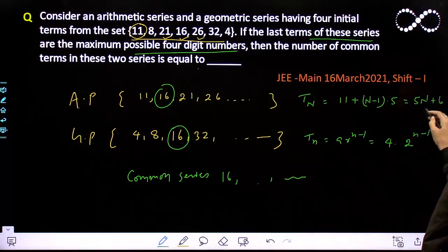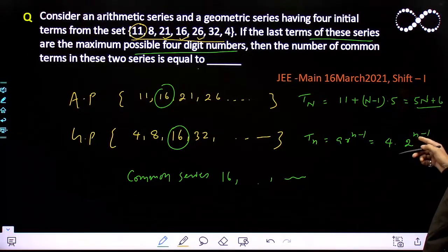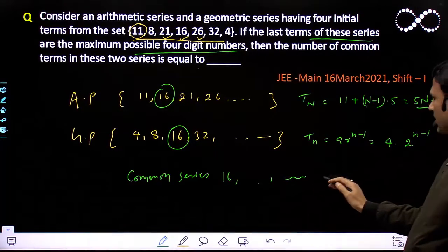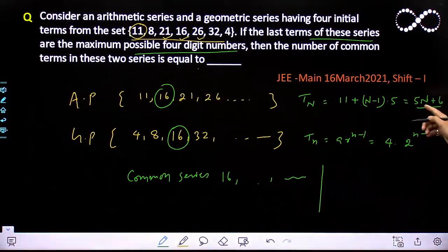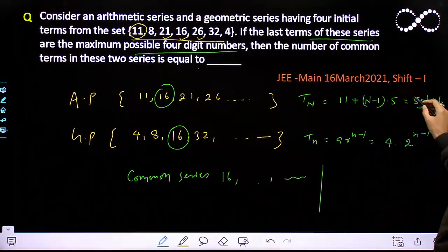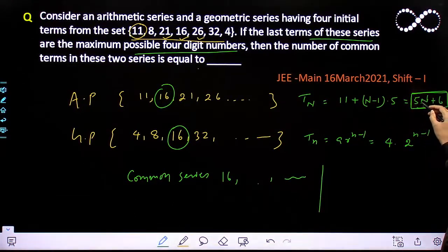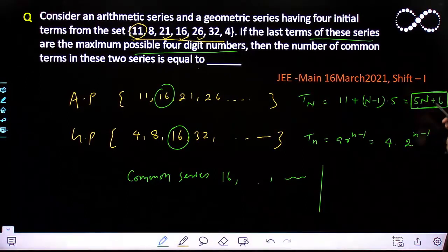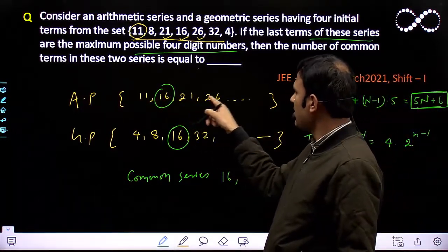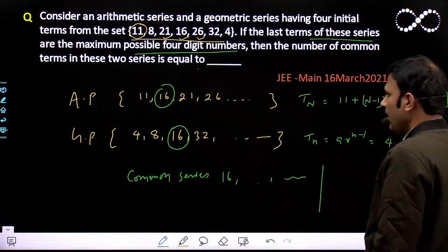We take Nth term, a + (N-1) × d, which is 11 + (N-1) × 5, where d is 5. So this becomes 5N + 6. Now see, this number and this number for natural numbers, n and N can be different. These don't have to be the same.